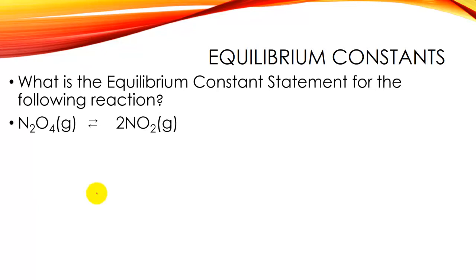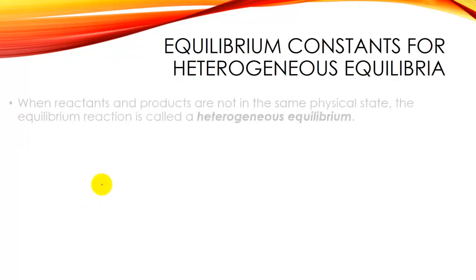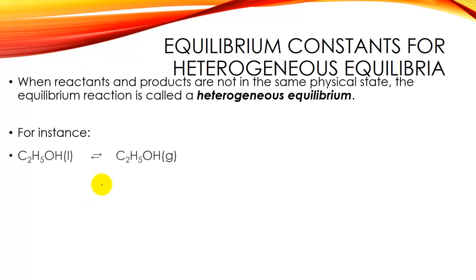I'm going to pause again and ask you to write in the K statement. If you're watching via YouTube, stop and write it on your own. This is homogeneous — only one product and one reactant, both gases. So KEQ or KC equals the concentration of NO₂ raised to the power of two, over the concentration of N₂O₄ to the power of one.